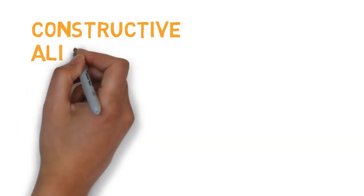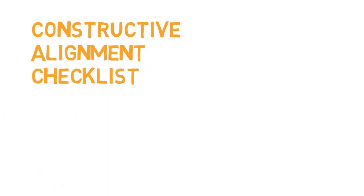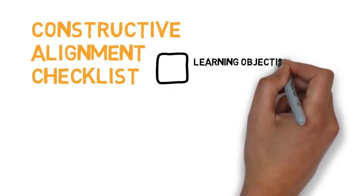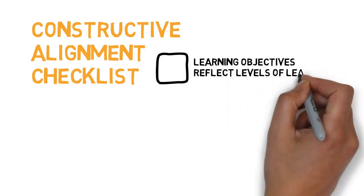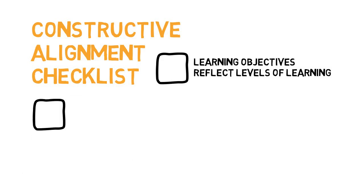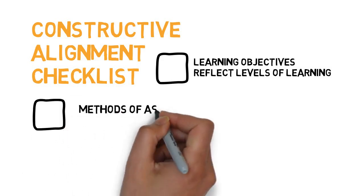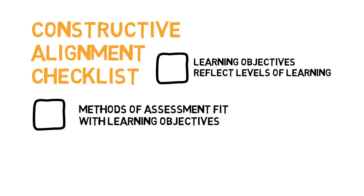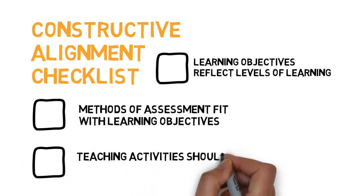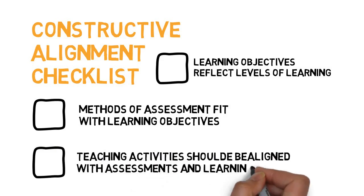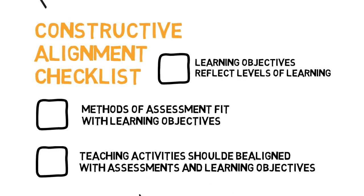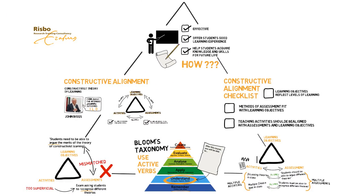So, what would be the ideal way to ensure constructive alignment in your course? First, make sure your learning objectives clearly reflect at which cognitive level they are targeted. Then, think about the methods of assessment that would best fit these learning objectives. And last but not least, design teaching activities and practice assignments that are aligned with both the assessments and the learning objectives, thus completing the triangle.